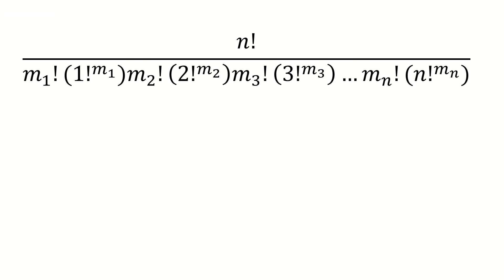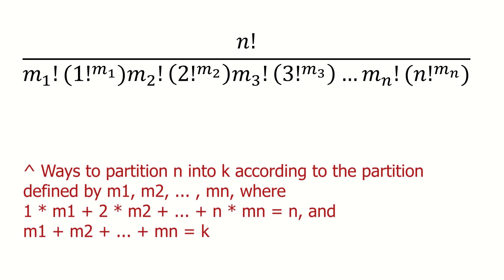And that's it. That's how we count the number of ways to partition a set of n distinct elements into k non-empty subsets according to a specific integer partition defined by the sequence m1 through mn, where m1 tells us the number of times 1 appears, m2 the number of times 2 appears, and so on, and where m1 through mn sum to k. I hope this helped you understand the combinatorial meaning of the coefficients in Faà di Bruno's formula. Thanks for watching.